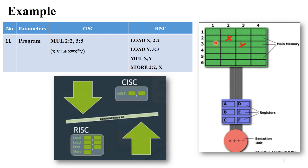In RISC architecture, to perform the same multiplication, you must first load the address of X (2:2) into register X, then load the address of Y (3:3) into register Y. After that you perform the multiplication X times Y, and the output is stored into the X location. So CISC architecture uses only one instruction to perform multiplication, but RISC architecture uses four instructions to perform the same multiplication.